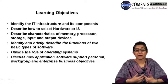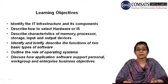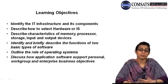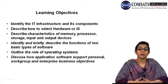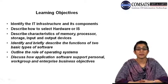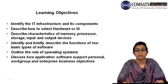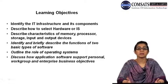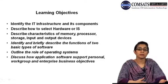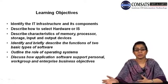We described how to select the hardware for information systems and we saw the different characteristics of memory, processor, storage, as well as the input and output devices. In the last lecture, we were discussing the different kinds of output devices as well as the different types of computers that could be used in any information system, ranging from small handheld computer systems to large mainframes and supercomputers.